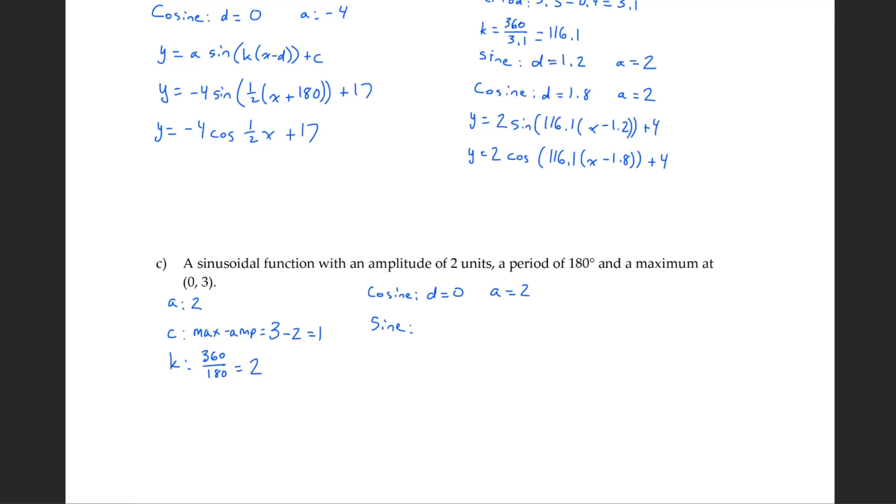Our sine, on the other hand, this is a little trickier because we don't have any information. So in this case it may be easiest to substitute in that maximum point. So y equals a sine k bracket x minus d bracket bracket plus c. It's giving us a point that is not on the axis. If it was, you would have to think it through just like we did a and b. But since it's the maximum, we can substitute in this point. 3 equals, I guess we'll use 2, sine 2 bracket 0 minus d bracket bracket plus 1.